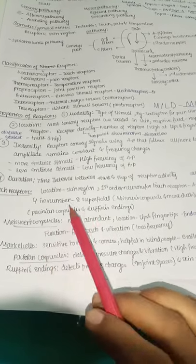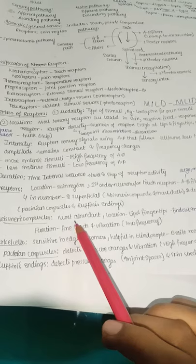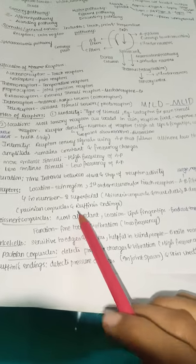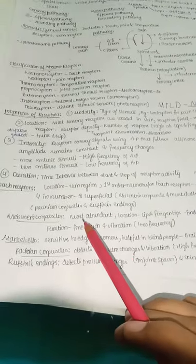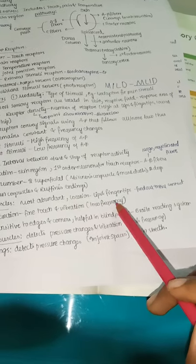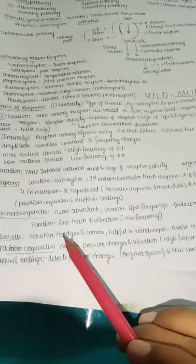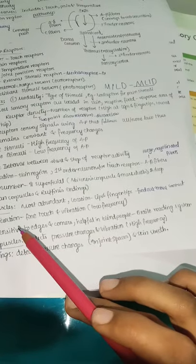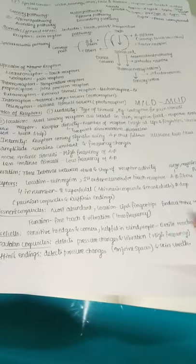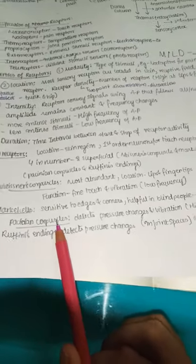Meissner's corpuscle is the most abundant among mechanoreceptors. Location: lips and fingertips. Function: fine touch and low-frequency vibration — used to detect initial contact.